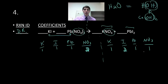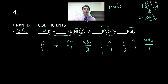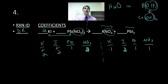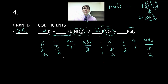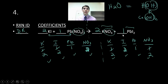This one is fairly simple. I'll pick I to balance first — I have 2 on the right and 1 on the left. I put a 2 out in front of KI. Now I have twice the iodide and twice the potassium: 2, 2, 1, 2. Everything is balanced except K on the right-hand side, so I put a 2 out in front of KNO3, updating the chart. This becomes 2 K and 2 NO3. Now it's 2, 2, 1, 2 on both sides — everything is balanced. Fill in a 1, and done.